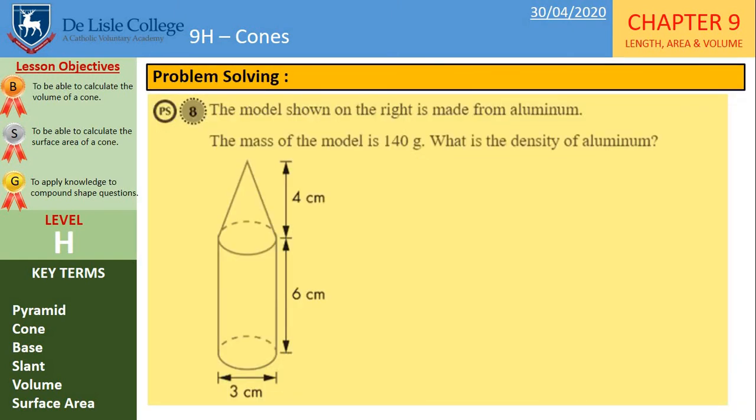A problem solving question for you. So you've got a compound shape, but you need to work out the density. So make sure you show all your work and pause the video while you do this question. OK, let's check the answer then. So we should have 7.2 grams per centimeters cubed. So you're going to do the mass divided by the total volume there.